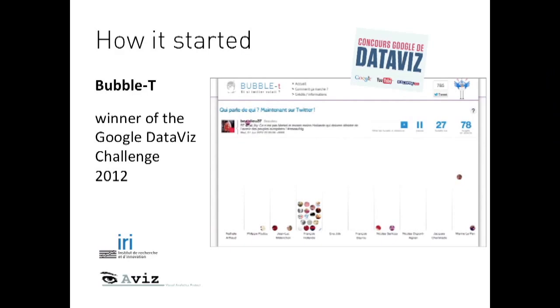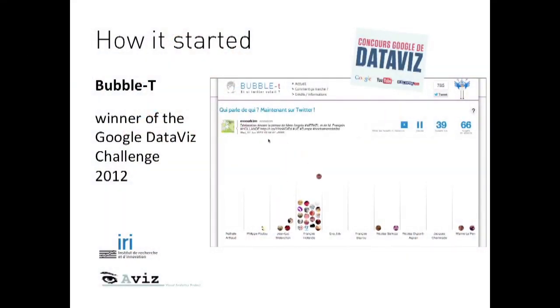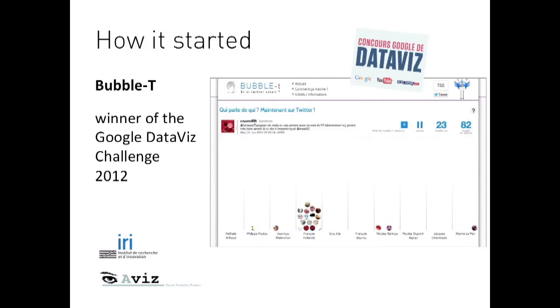That's exactly what interested France Télévisions when they came on board at IRIE. So how did it start? Researchers from IRIE and Avis from INRIA collaborated in 2012 for the Google Data Viz Challenge — to create a data visualization for the French presidential election. The project Bubble Tea won the second prize.